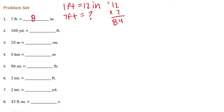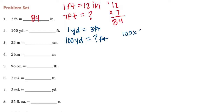So it would be equal to 84 inches. Number 2: 100 yards equals how many feet? We know that 1 yard is equal to 3 feet. If we have 100 yards, we're going to need to multiply 100 times 3, which is equal to 300 feet.